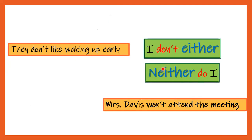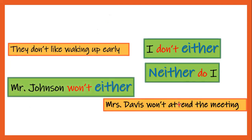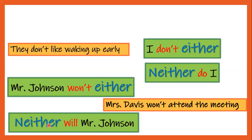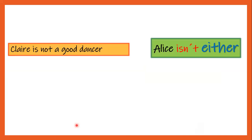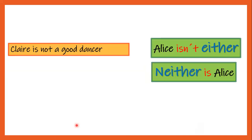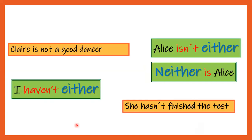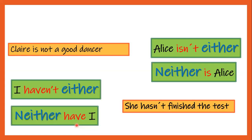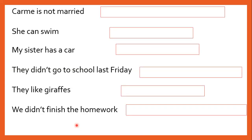Another example: 'Mr. Davis won't attend the meeting — Mr. Johnson won't either.' We write either at the end of the sentence just after the auxiliary verb in negative. 'Neither will Mr. Johnson' — we write neither at the beginning of the sentence before the auxiliary verb, but in positive. 'Claire is not a good dancer — Alice isn't either / Neither is Alice.' 'She hasn't finished the test — I haven't either / Neither have I.' Okay, now we are going to practice.